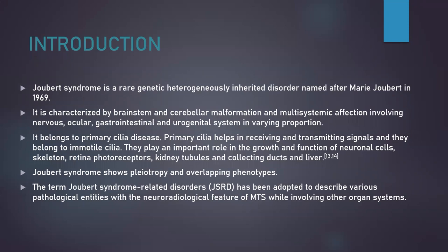Introduction. Joubert syndrome is a rare genetic heterogeneously inherited disorder named after Mary Joubert in 1969. It is characterized by brainstem and cerebral malformation and multisystemic affection involving nervous, ocular, gastrointestinal, and urogenital system in varying proportion. It belongs to a primary cilia disease. Primary cilia, which are immotile cilia, help in receiving and transmitting signals. They play an important role in growth and function of the neuronal cells, skeleton, retina photoreceptors, kidney tubules and collecting ducts, and also liver.